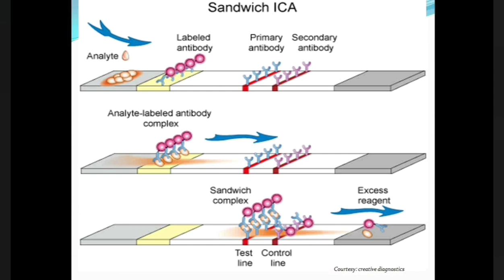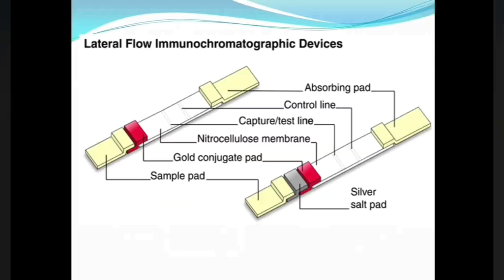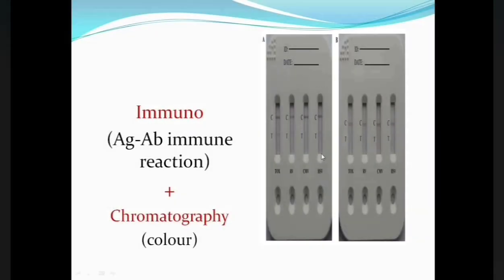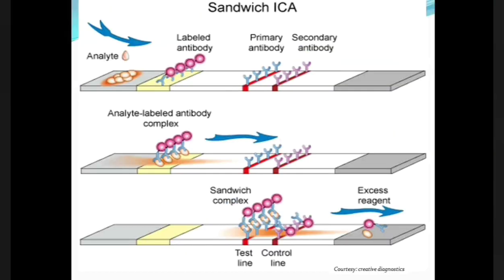If the sample is negative, it has no antigen, and there is no sandwiched immune complex formed on the test line, so we do not get any colored test line. As seen in this picture, there is no colored test line, meaning the test is negative — the sample does not contain antigen, and without antigen no sandwiched complex is formed, resulting in a non-colored test line.